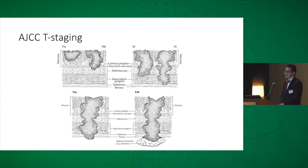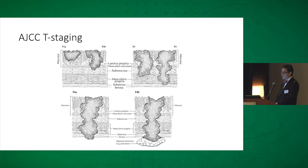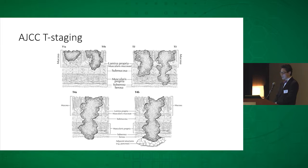The AJCC T staging for gastric cancer is based on the depth of penetration, not the size of the mucosal lesion, but the depth of penetration. When talking about neoadjuvant therapy, what we're really looking for is the pathologist to comment on the relationship of the tumor to the muscularis propria. T1 lesions do not impinge on the muscularis propria, T2 lesions do, T3 lesions repenetrate, and T4 lesions are more advanced with transmural involvement of the gastric wall.